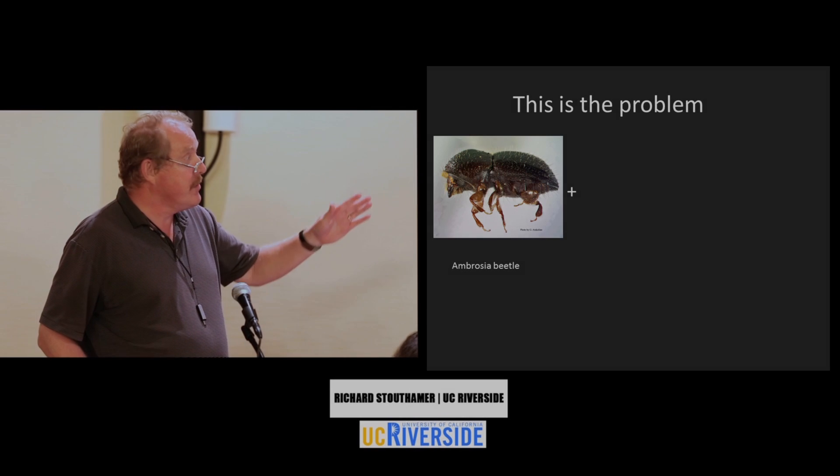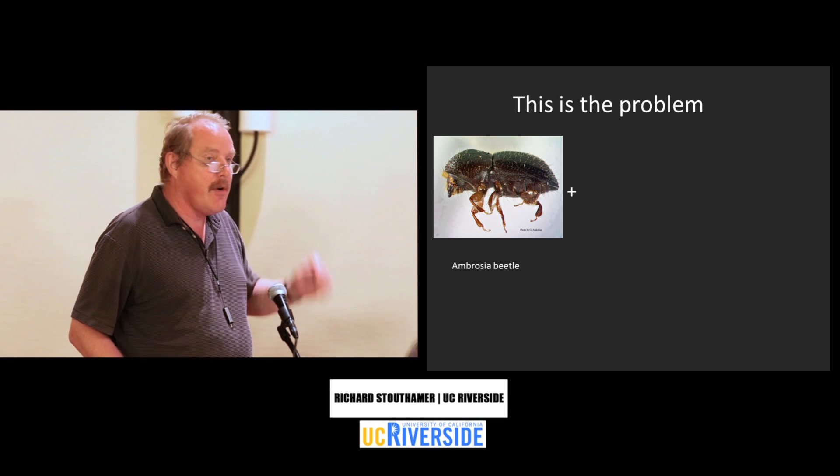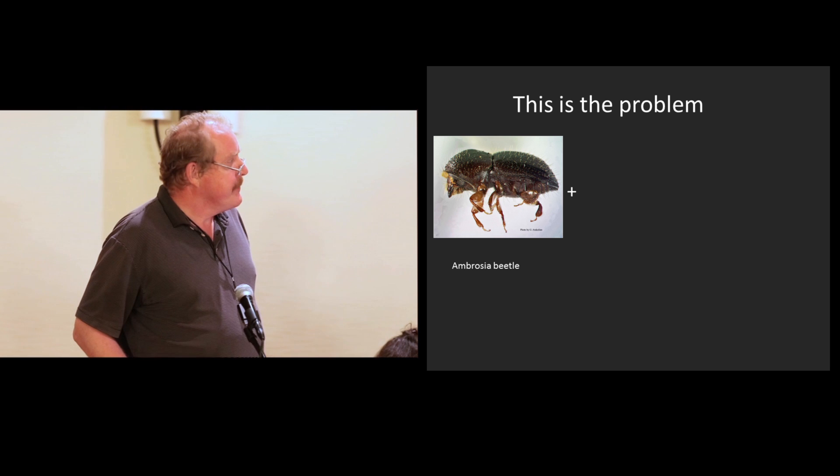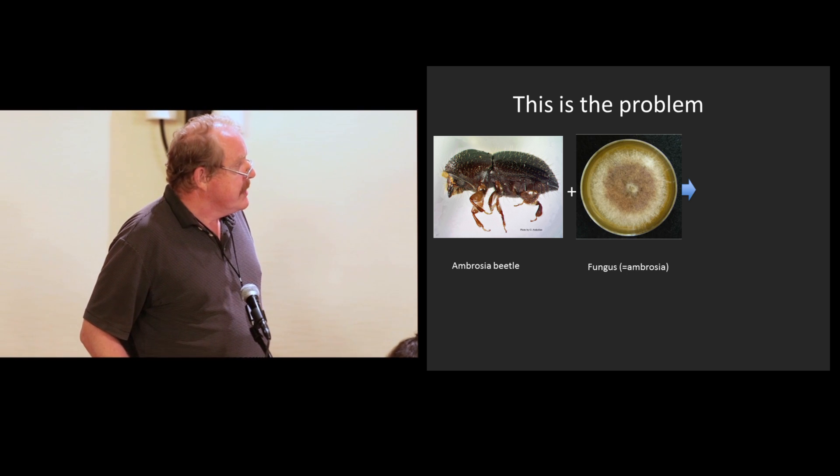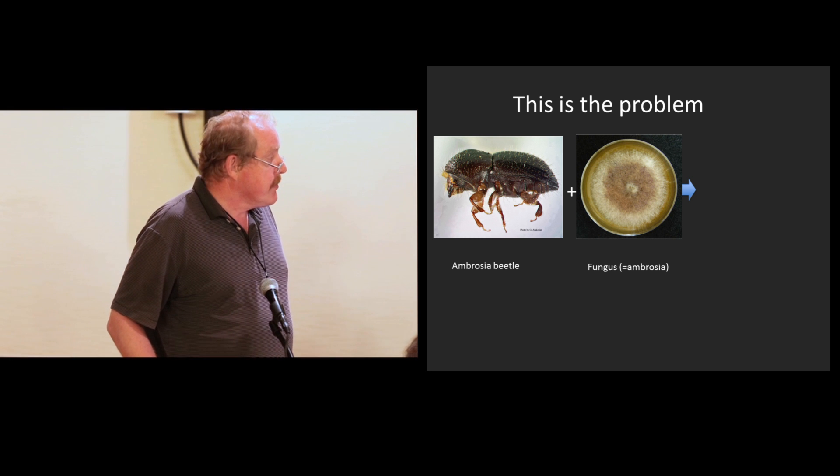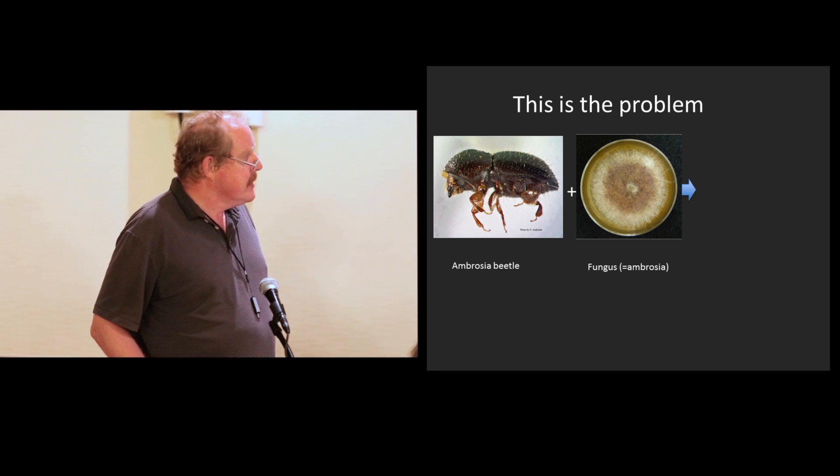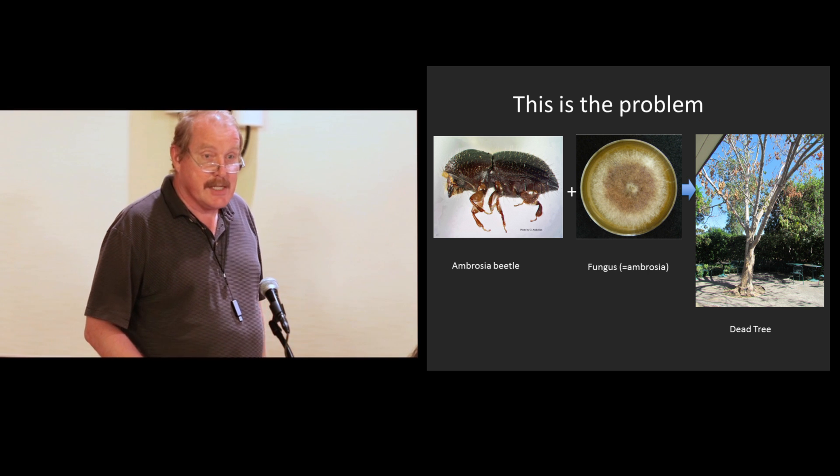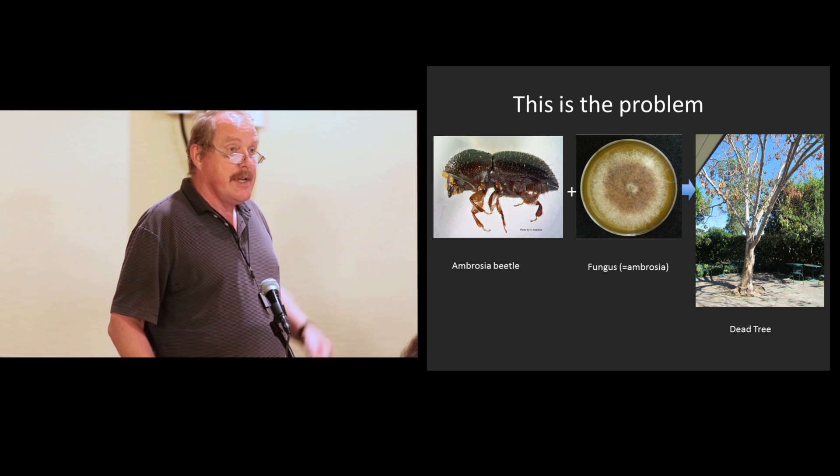We're going to keep it really short. This is the slide, and after this you can go home. So this is the problem. We've got a beetle, an ambrosia beetle, which carries with it a symbiotic fungus. It needs that, and it's called ambrosia for some curious reason. And them together kill trees in some cases. So now you can leave.